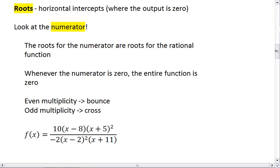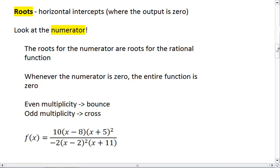Let's start with roots. Remember, roots are horizontal intercepts. It's where the output is zero. To figure out where the roots are, we want to look at the numerator. Roots are linked directly with the numerator of rational functions.